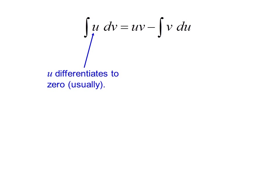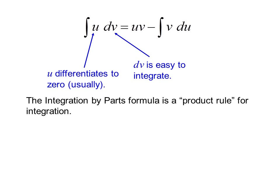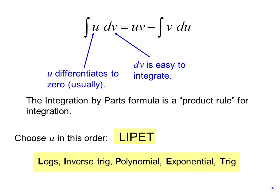When using the integration by parts formula, u differentiates to zero — usually — and dv is something that's easy to integrate. The integration by parts formula is a product rule for integration. Choose u using the order LIPET, which stands for Logs, Inverse Trig, Polynomial, Exponential, and Trig.